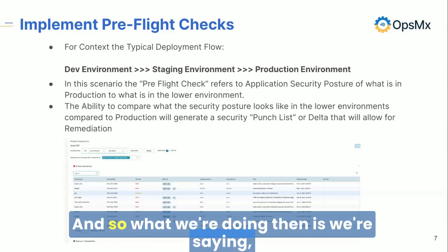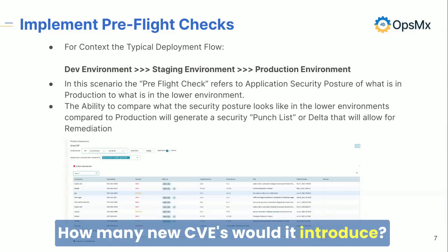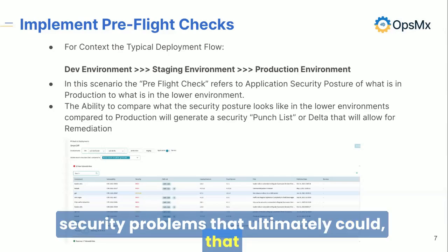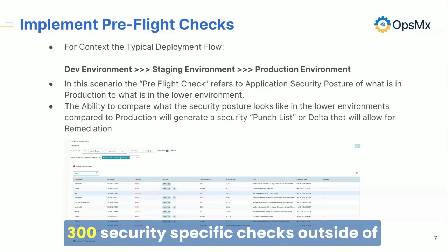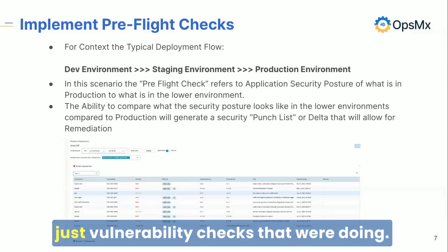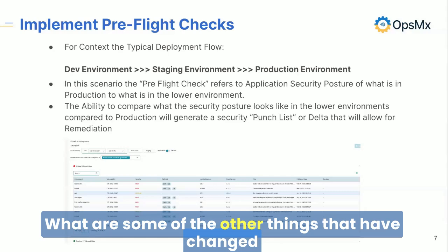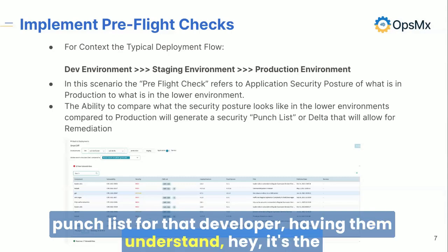What we're doing then is saying, let's compare: how many CVEs would this resolve? How many new CVEs would it introduce? What are some of the other security problems that this particular deployment could face? Because we've got over 300 security-specific checks outside of just vulnerability checks that we're doing. What are some of the other things that have changed between what's now in production and what's in your dev environment? The net result is a really focused punch list for that developer.